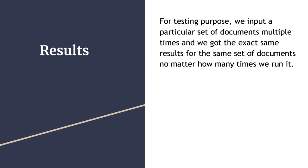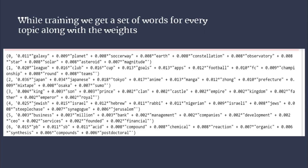Now Kanika will explain the results. For testing we input a particular set of documents, and we got the same results consistently no matter how many times we provided the input. After extracting the files using MakeWiki and training the model, we got results showing the topic number and the bag of words associated with each topic along with the probabilities, essentially the weights.